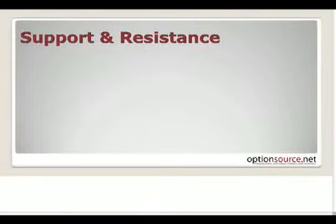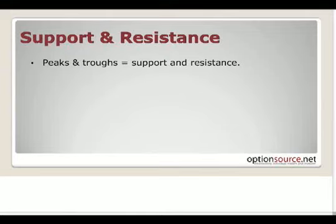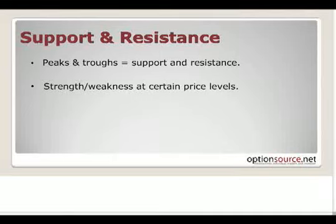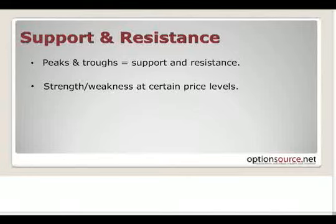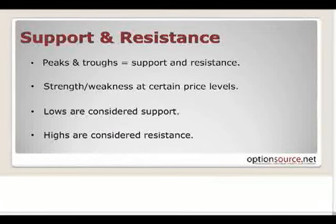Just a little more on support and resistance, because I think everyone can see that it is more or less the foundation of our technical approach to understanding the markets. The understanding of support and resistance is quite simple: the peaks and the troughs are really what we're looking at as support and resistance levels. They simply represent strength or weakness at certain price levels. The lows are considered our support levels, and the highs are considered resistance.